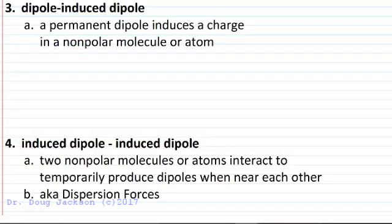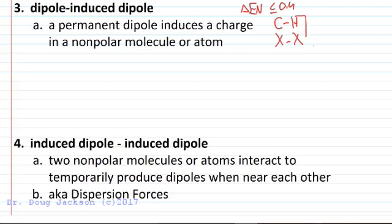A dipole-induced dipole interaction is when you have a permanent dipole, but you induce a charge in a nonpolar molecule or atom. Nonpolar textbook definition is electronegativity difference less than 0.4, less than or equal to 0.4 or less than 0.5. CH falls into that category and anything bonded to itself has an electronegativity difference of zero. So these are considered to be nonpolar.